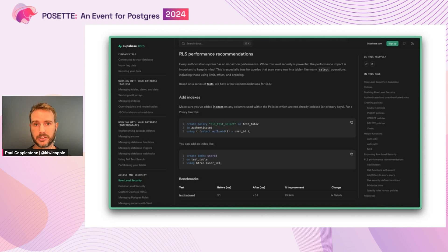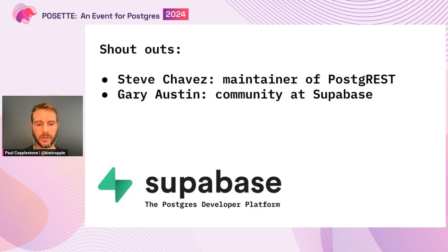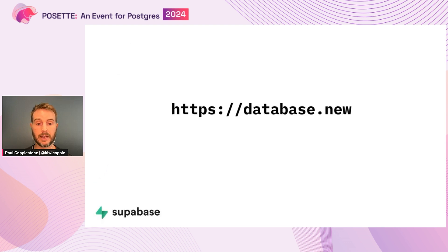There are a ton of tips and tricks — I've just covered a few of them. We have docs inside the Supabase docs with benchmarks for each thing I've gone over, and a few more, showing how much performance gain each one gives you. A big shout out to Steve, the maintainer of PostgREST who works at Supabase, and to Gary who did a lot of the performance benchmarking of RLS, and the broader Supabase community who have really leaned into RLS. If you're looking for a Postgres database, check us out — you can launch a new database at database.new.